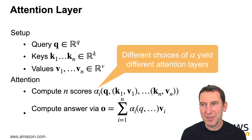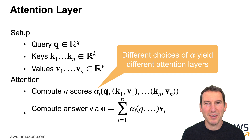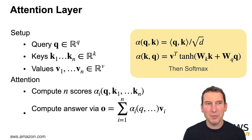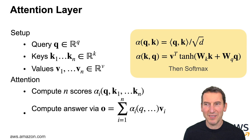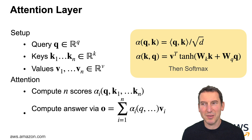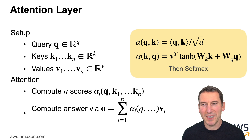Different choices of alpha give me different attention layers, and there are two or three sensible ones — it's probably not worth over-engineering this too much because most of them do a good job. One option is to take inner products between queries and keys and renormalize appropriately. Or you can use a hyperbolic tangent — basically an MLP where you take an inner product between the keys, queries, and values, then apply softmax to get the appropriate scores and the final answer.